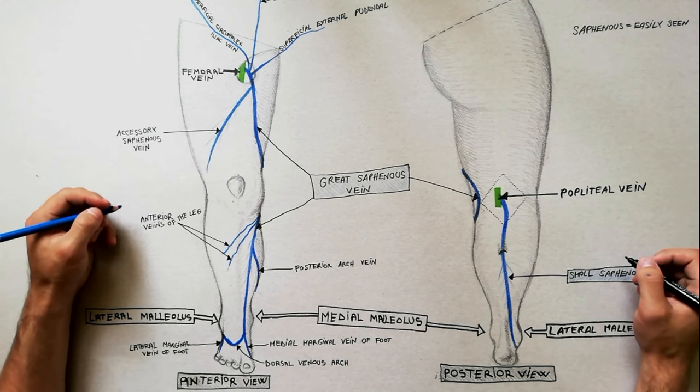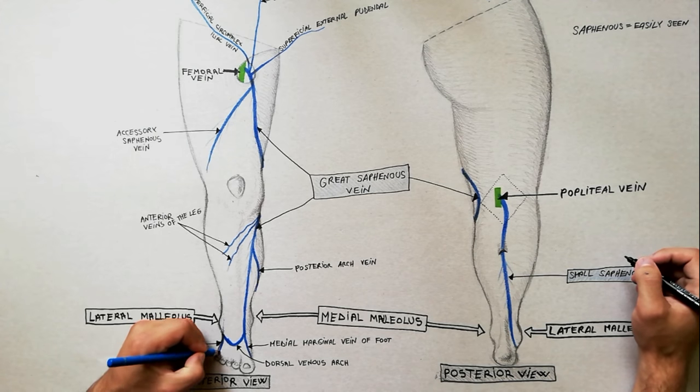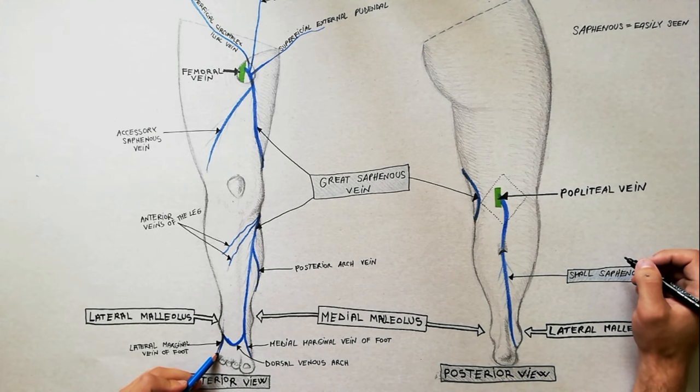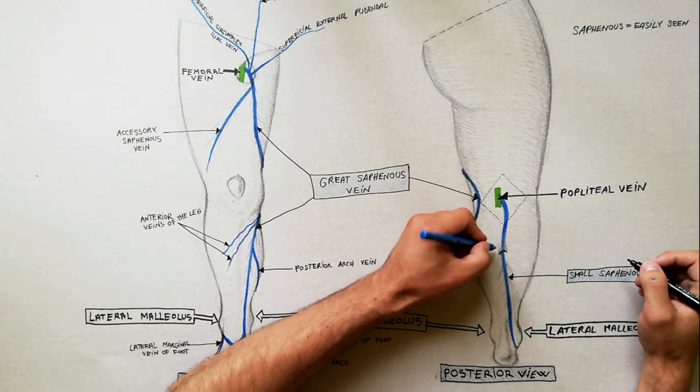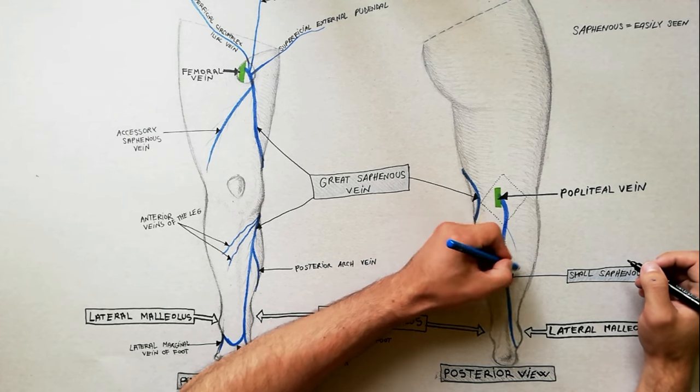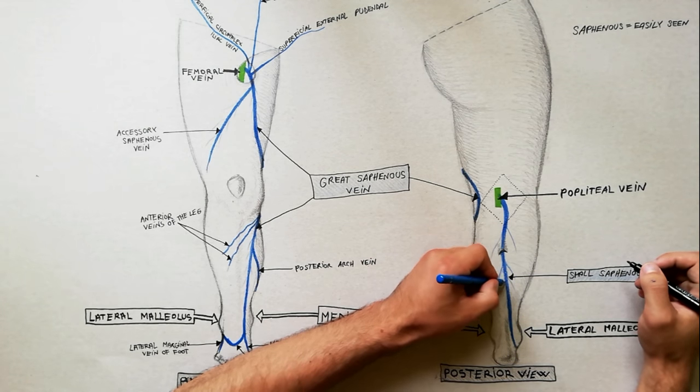Tributaries of the small saphenous vein are, at the commencement, the lateral marginal vein of foot. In the leg, we have numerous small veins on the back of the leg draining into the small saphenous vein.